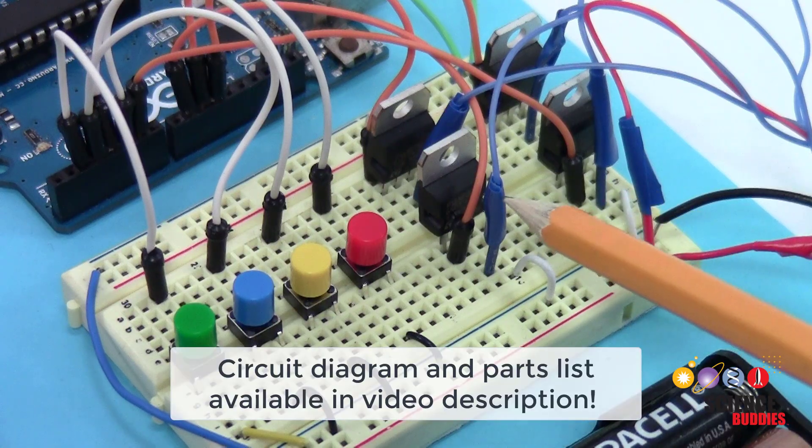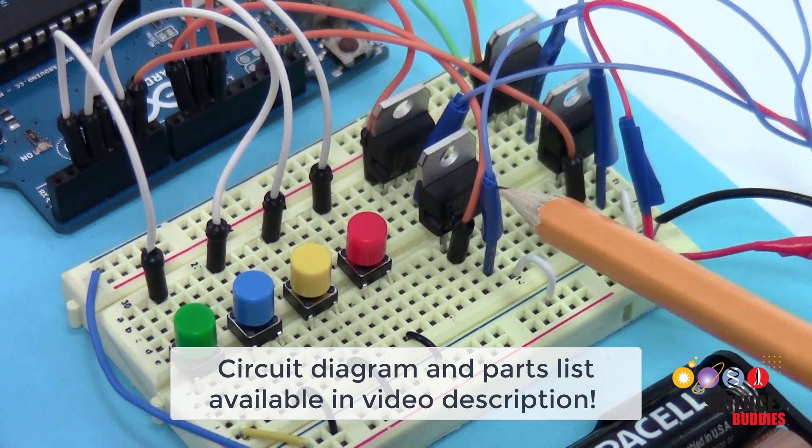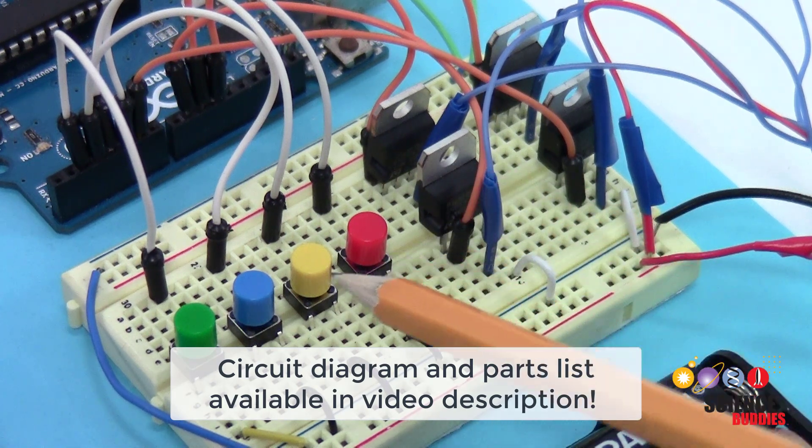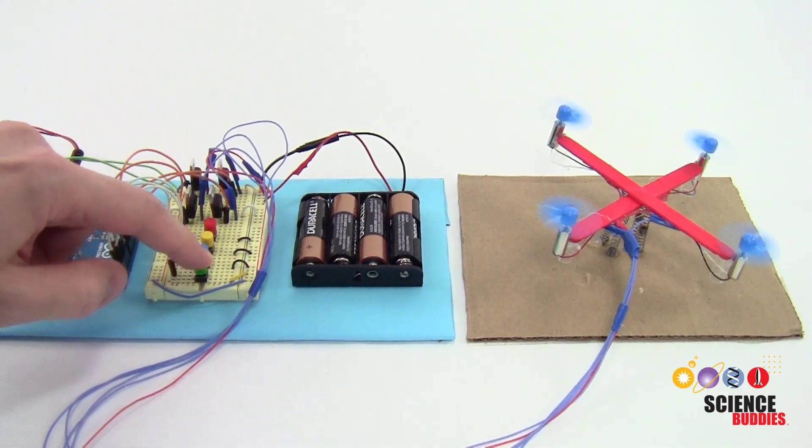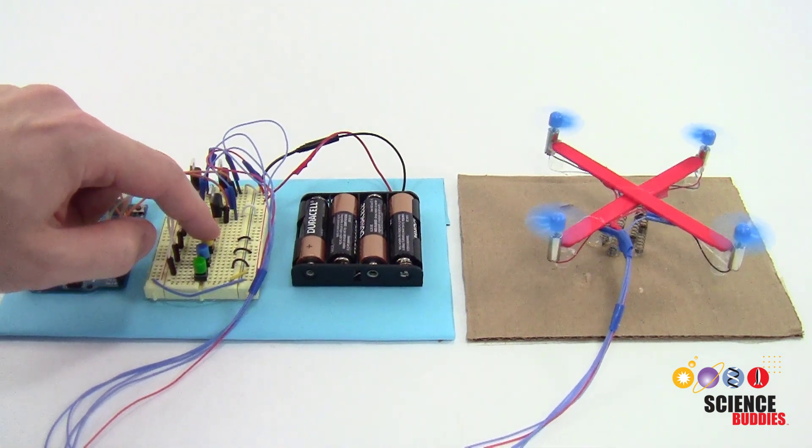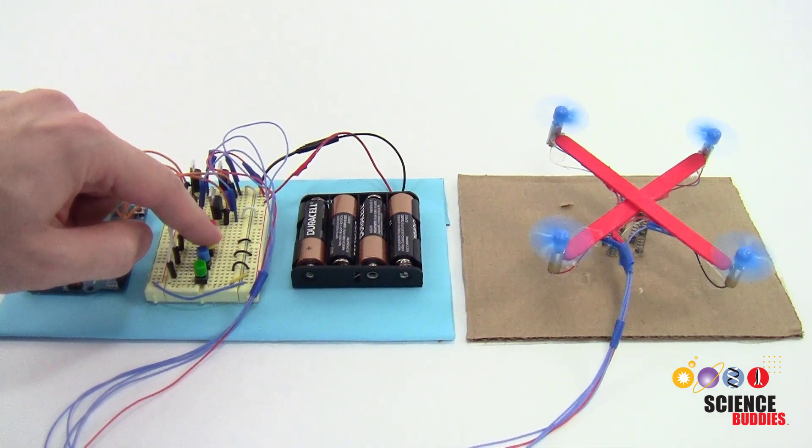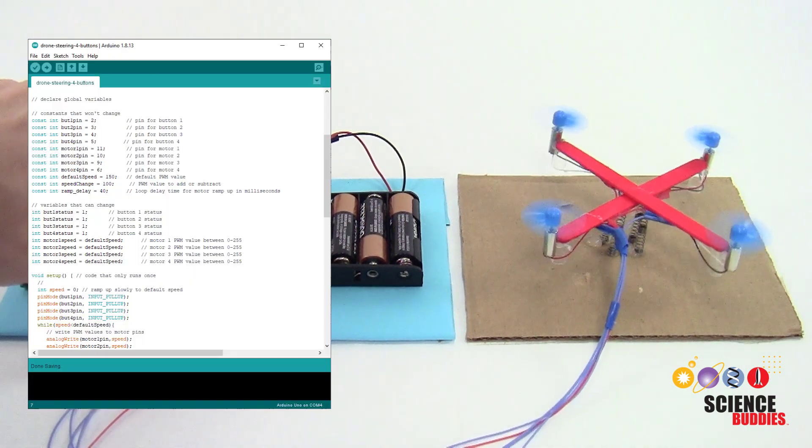Each motor's control wire is connected to a transistor that is controlled by the Arduino. The Arduino is also connected to four buttons that are used to steer the drone. The Arduino is programmed such that pressing each button causes two motors to speed up while the opposite two motors slow down. This allows you to tilt the drone in four different directions. You can download working example code from the activity linked in the description below this video.